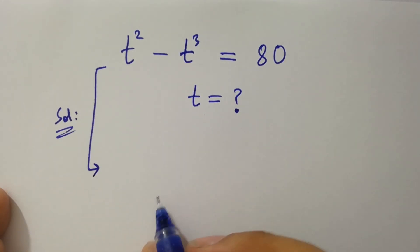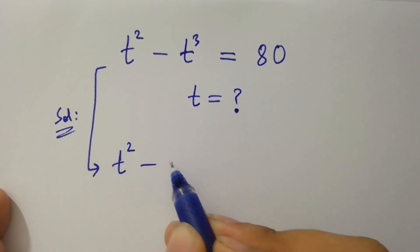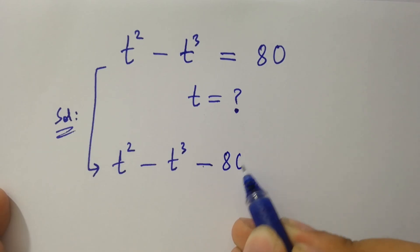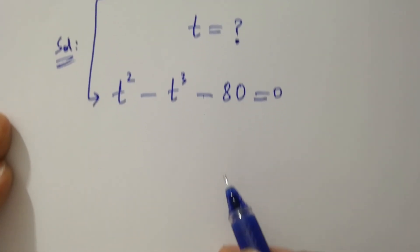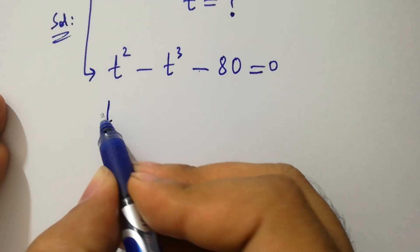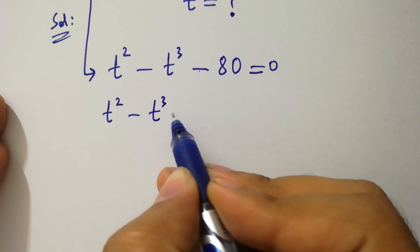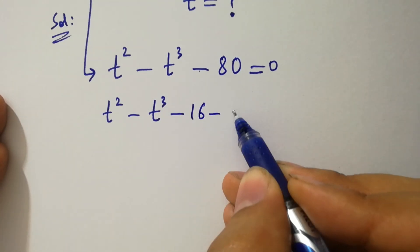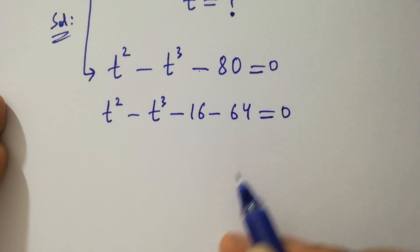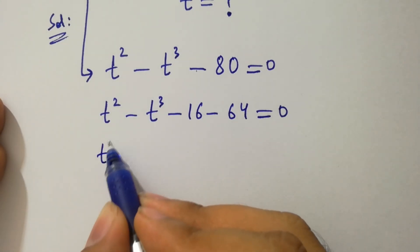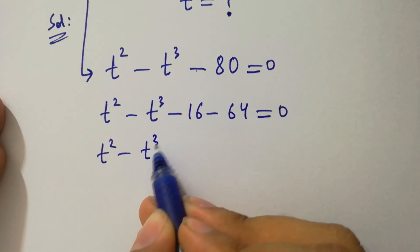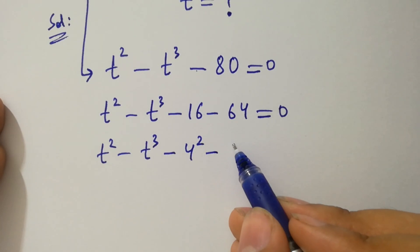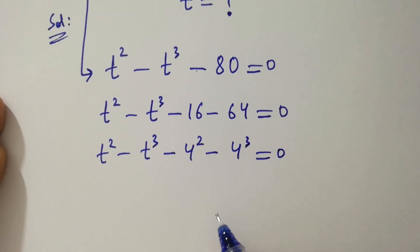It can be written as t squared minus t cubed minus 80 equal to 0. So, t squared minus t cubed minus 80 is the same as minus 16 minus 64 equal to 0, where 16 is the same as 4 squared and 64 is the same as 4 cubed.